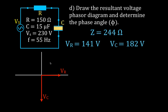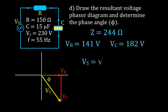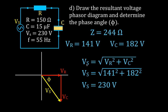To find the source voltage, we add the two voltage vectors head to tail. That resultant vector represents the source voltage, which should be 230 volts. Using the Pythagorean theorem — A squared plus B squared equals C squared — we confirm the source voltage is 230 volts. The angle phi is the angle by which the source voltage lags the current, which in an RC circuit should be between 0 and 90 degrees.